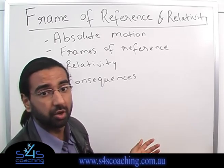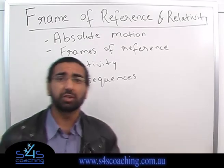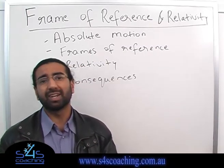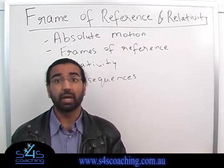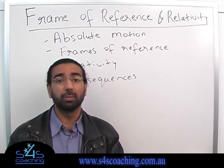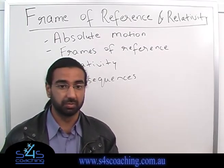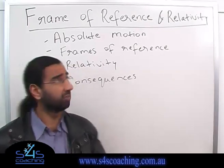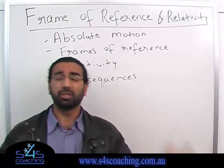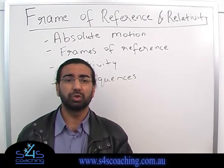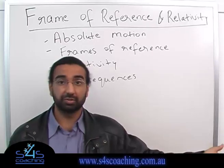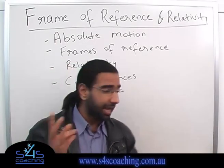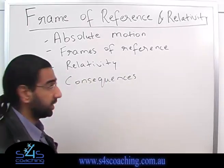So just to start off, a frame of reference. The definition of a frame of reference is it refers to a provided set of axes from which an observer can measure the position and the motion of all points in the system as well as the orientation of objects. Basically, a frame of reference is a coordinate system with respect to which you can make measurements. For example, the ground is a frame of reference; a car is a frame of reference. There are two types of frames of reference that we're interested in.